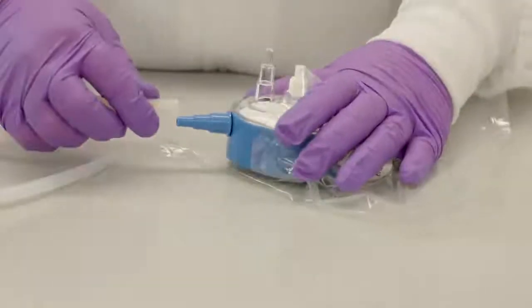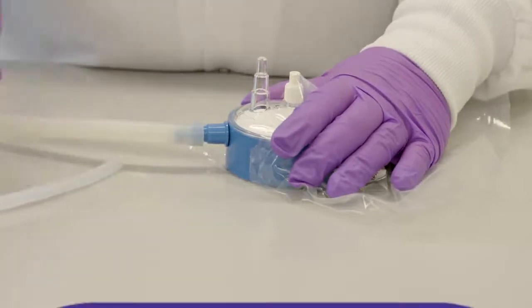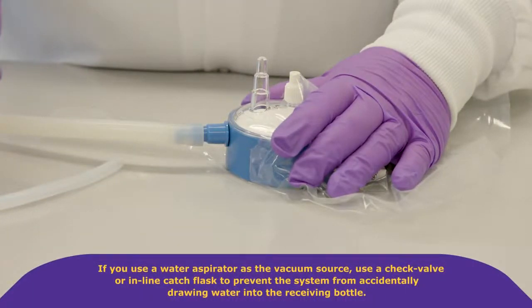Attach the blue vacuum port on the side of the unit to a regulated vacuum source. If you use a water aspirator as a vacuum source, use a check valve or inline catch flask to prevent the system from accidentally drawing water into the receiving bottle.